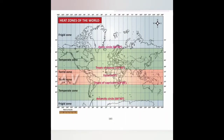Because the earth is spherical in shape, different parts of the earth get heated differently based on heat from the sun. Therefore, the earth is divided into three heat zones: torrid zone, temperate zone, and frigid zone. The torrid zone lies between the Tropic of Cancer and the Tropic of Capricorn. This region receives direct rays of the sun and gets maximum heat.